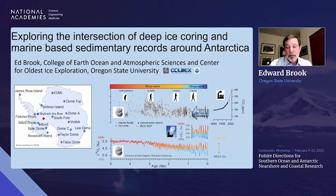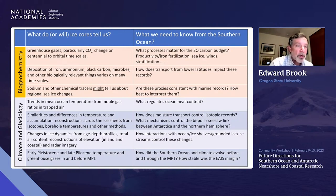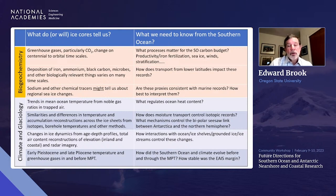We are also finding basal ice — we have ice back to about four million years trapped in mountain ranges at Allan Hills in Antarctica, and we're exploring other places like that to get snapshots of climate going back that far. Ice cores are telling us a lot about biogeochemistry, climate, and glaciology — including the greenhouse gas history, changes in biogeochemistry of iron that might influence ocean productivity, and changes in sea ice through tracers like sodium. But we need to understand the ocean context for all these records.